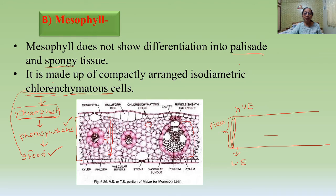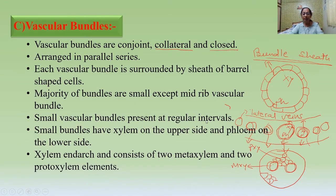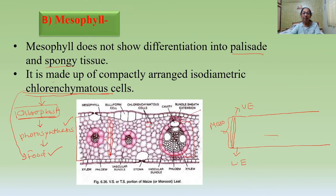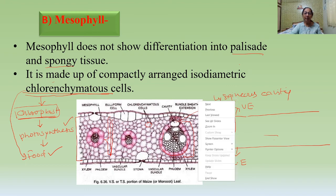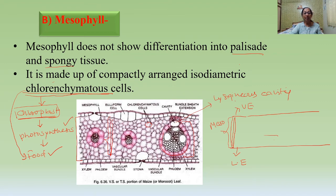In the detailed structure of the vascular bundle, the midrib vascular bundle has two large metaxylem elements and protoxylem elements. There is also a cavity present — this is the lysigenous cavity. This cavity is formed by the disintegration of the protoxylem element; the protoxylem element disintegrates and a cavity develops, called the lysigenous cavity.